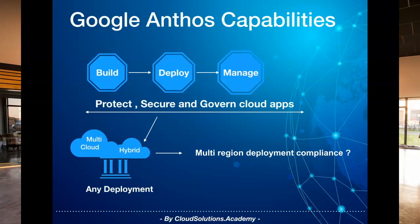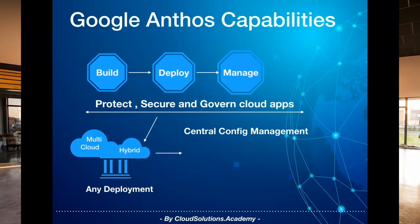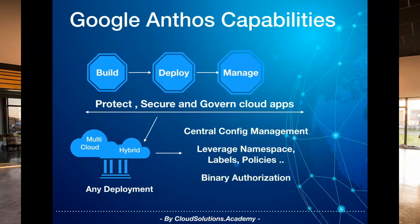The region can also be a hybrid on-prem environment where cloud location is not available. To address these requirements, Anthos provides central config management where required configuration policies and rules can be applied to all or some of the environments, validated and kept in sync with the required state. You can apply tags like namespaces and labels to cluster environments and target policies and deployments based on these tags. As part of the continuous integration process, you could validate policies prior to deployment. From a security perspective, you can use tools like binary authorization to ensure only trusted container images are deployed. And finally, you can continuously audit your clusters to ensure they are regulated and compliant as per your defined policies and rules.